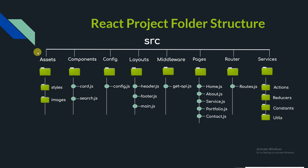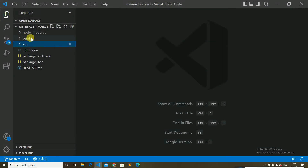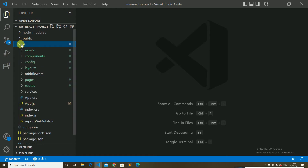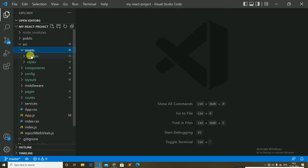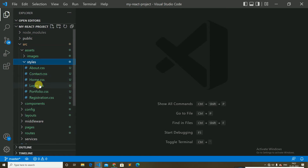The asset folder, as the name says, consists of the assets of our project. It contains the images and styles folders. Here we can store our global styles, as we are centralizing the project, so we can store page-based and component-based styles here. The images folder is where we store all project images. Inside the asset folder you can see two subfolders: images and styles.